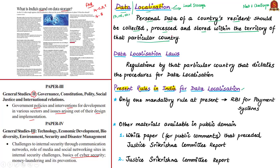Data localization laws are the regulations enacted or created by any particular country that wants to store personal data within its territory. They dictate the procedures for data localization to technology companies that store data outside that country. Technology companies like Facebook, Microsoft, Google, Amazon, etc. all store the personal data of Indian citizens outside India. Hence, India is pushing for data localization. Let us see the present status of regulations with respect to data localization in India.